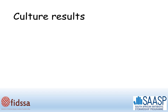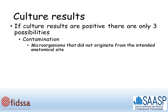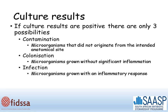The second results are culture results. It's important to understand that if a culture is positive, there are only three possible explanations. The first is contamination — when microorganisms that did not originate from the intended anatomical site are present in the sample. The second is colonization, when microorganisms are grown from an anatomical site but there's no significant inflammation and no true infection is present. And the third possibility is infection, when microorganisms are grown and there's an inflammatory response, and so true infection is present.